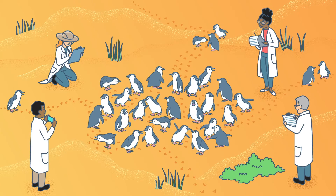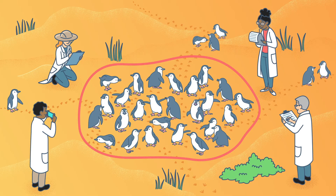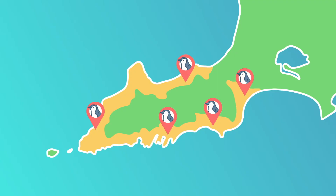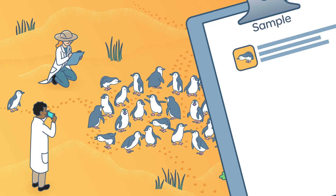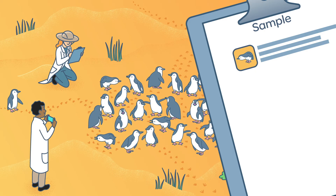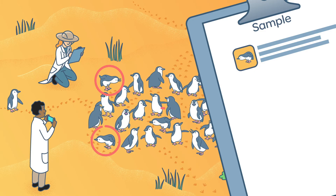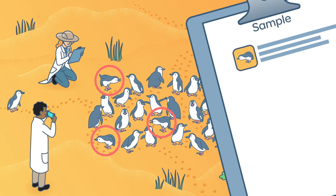So instead, the scientists collect data from a sample of the population. This means they record observations of some of the penguins at different sites around the island. Using a sample instead of a census means the scientists have to make assumptions — they assume that the behaviour they observe in some penguins is the same as the behaviour of the rest of the population.